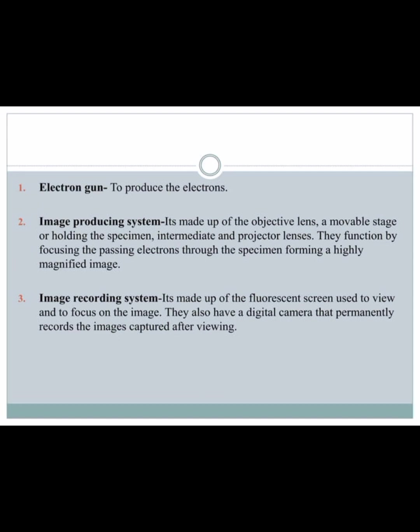These components function by focusing the passing electrons through the specimen, forming a highly magnified image. The image recording system is made of a fluorescent screen used to view and focus on the image. It also has a digital camera that permanently records the captured image.